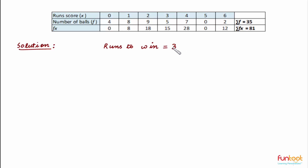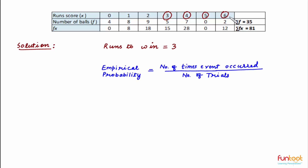The number of runs required by team B to win the match is three. To find the probability of winning, we need to add the probabilities of getting three runs or more on the last ball — that means probabilities of getting three, four, five, or six runs. We use the formula for empirical probability: number of times the event occurs divided by number of trials.